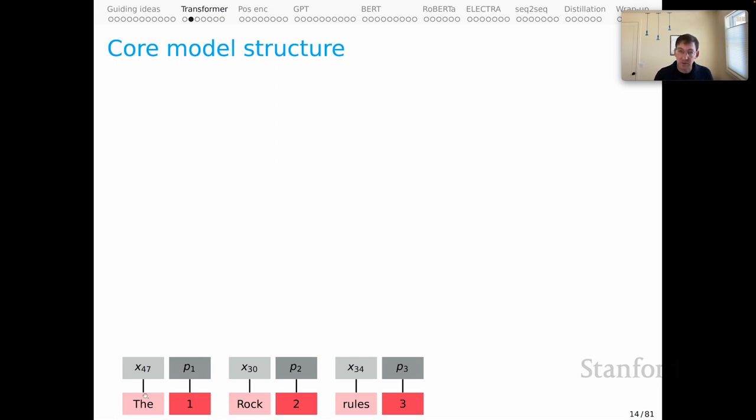We do something similar for these positional tokens here and get their vector representations. And then to combine them, we simply add them together dimension-wise to get the representations that I have in green here, which you could think of as the first contextual representations that we have in this model.